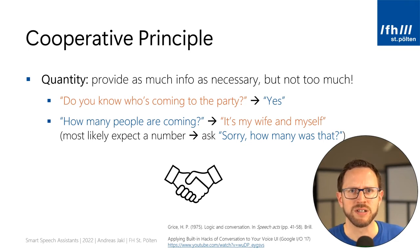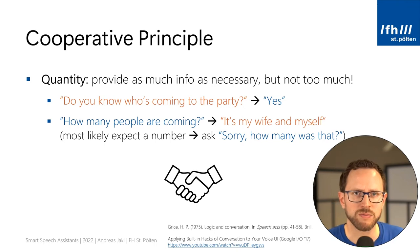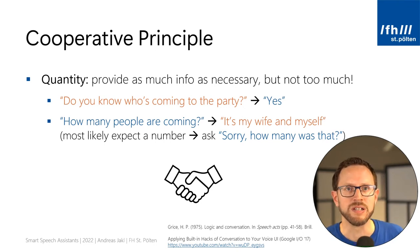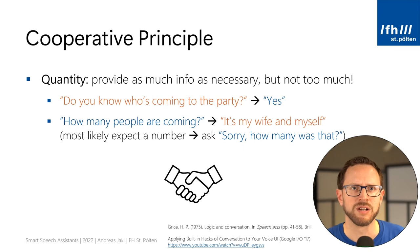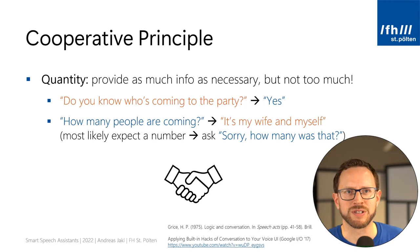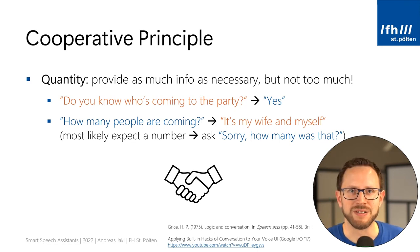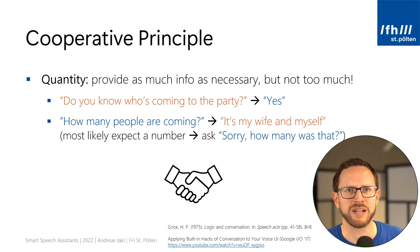One of the main issues is the quantity of information you give — it should be as much as necessary, but neither too little nor too much. For example, if you have a party planner skill and the user asks 'Do you know who's coming to the party?', a perfectly correct answer would be 'Yes.' But if you cooperate in a conversation, that's not the answer the user expects. Instead, they would like to hear something like 'Yes, Marianne and Christoph will be coming.' So giving a too-short answer is not always helpful.